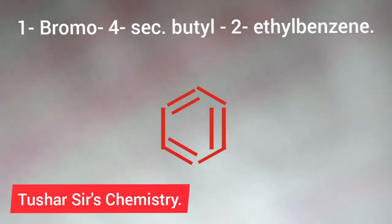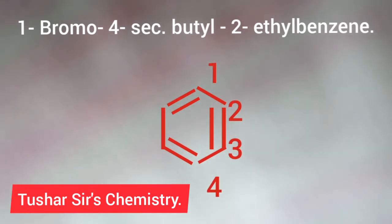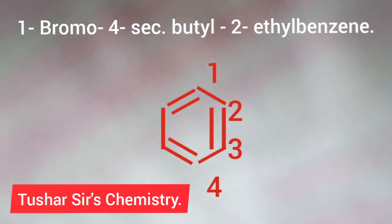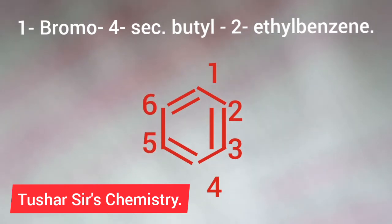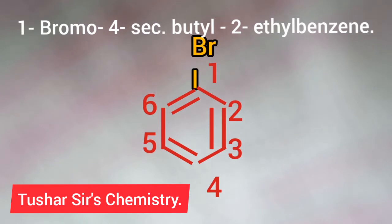Then numbering of the corners of the benzene are given: 1, 2, 3, 4, 5, 6. At position one, Bromine is there. So write Br at number one position.